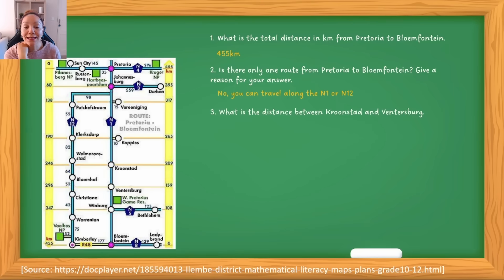Next question: what is the distance between Kroonstad and Ventersburg? I would like you to pause this video and see if you can find it and get the right answer. So first, I'm going to find where is Kroonstad and Ventersburg. If I look at the map, here's Kroonstad and here's Ventersburg. So this is the distance. The way you find the distance on the main line parallel to these yellow lines is you take the distances between the two points and subtract these values from each other.